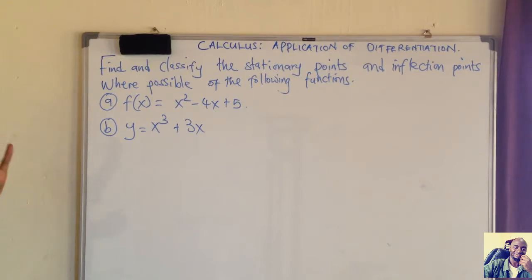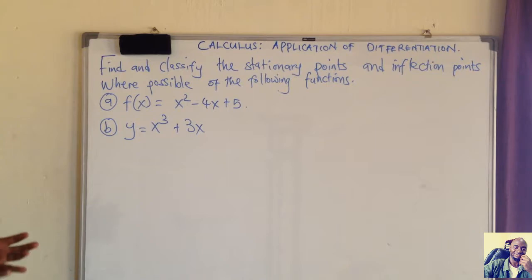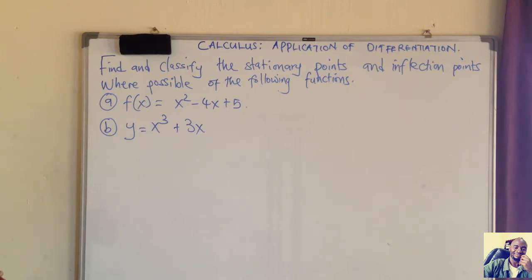We have three types of critical points or stationary points: a maximum, a minimum, or a point of inflection. The point of inflection is sometimes called the saddle point.